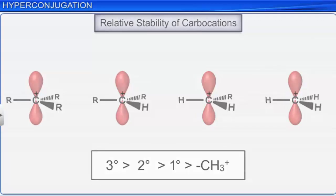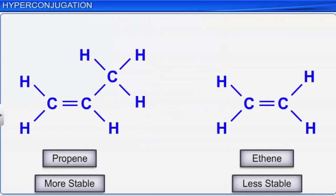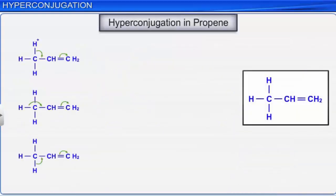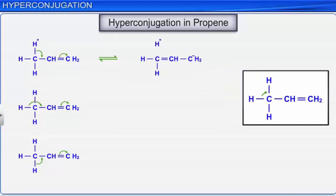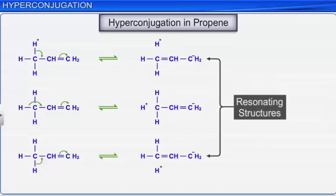Hyperconjugation also explains the stability of certain olefins over others. For example, propene is more stable than ethene because in propene there are three C-H hyperconjugated bonds which lead to greater stability. In the resonating structures of propene, there is no definite bond between the carbon atom of the methyl group and one of the hydrogen atoms. Hence, hyperconjugation is also known as no-bond resonance.